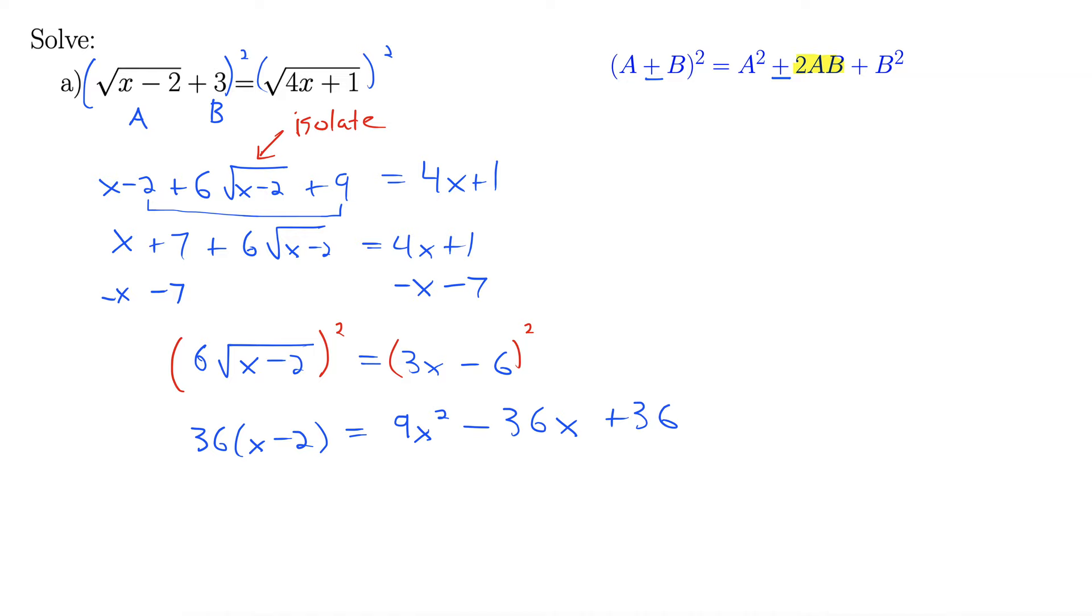Anytime you see an x squared and an x, you want to get a 0 on the other side of the equal sign. This is 36x minus 72 equals 9x squared minus 36x plus 36. So let's get all the numbers and variables to the right and 0 on the left. 0 equals 9x squared minus 72x plus 108.